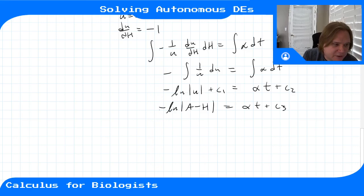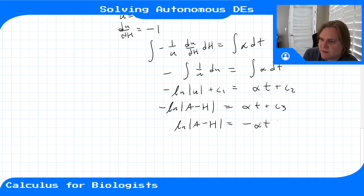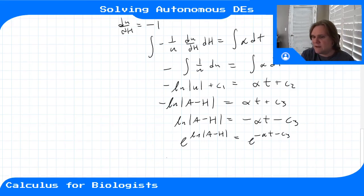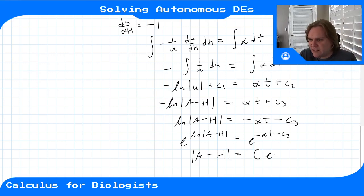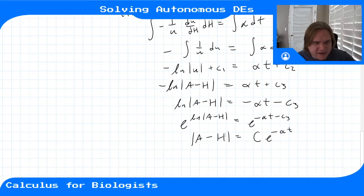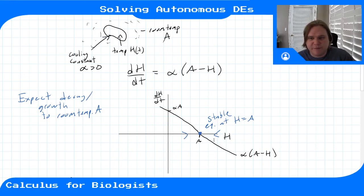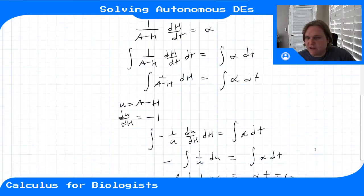Multiplying both sides by -1 gives ln|a - H| = -alpha*t - C₃. Taking the exponential of both sides: e^(ln|a - H|) = e^(-alpha*t - C₃), so |a - H| = C*e^(-alpha*t), where C is a new constant. At this point we don't know whether H is bigger or smaller than a — that depends on the initial condition — so let's leave it in this form and apply an initial condition to find the solution.